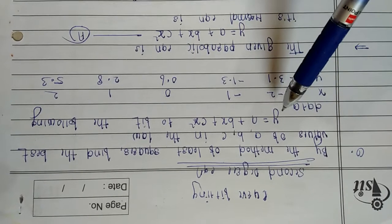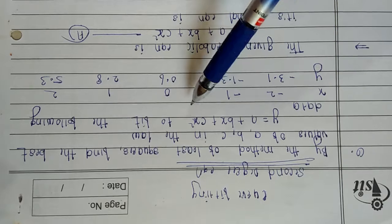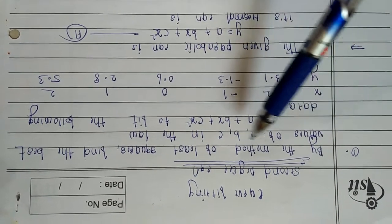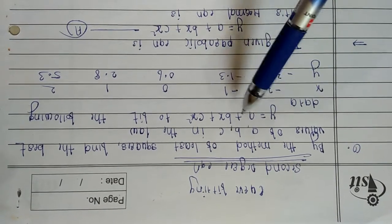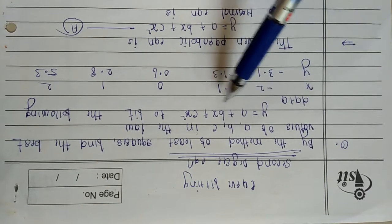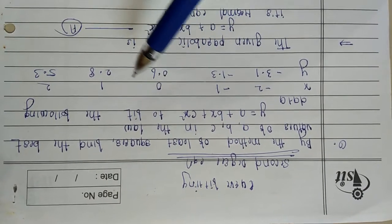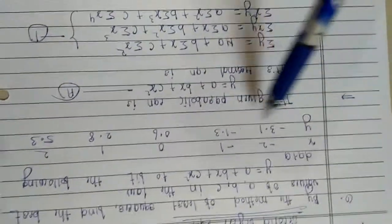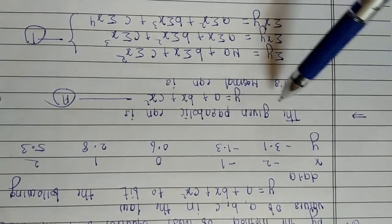The second degree equation is of the form y = a + bx + cx². The question is: by the method of least squares, find the best values of a, b, c in the law y = a + bx + cx² to fit the following data. This is the given value of x and this is the given value of y.